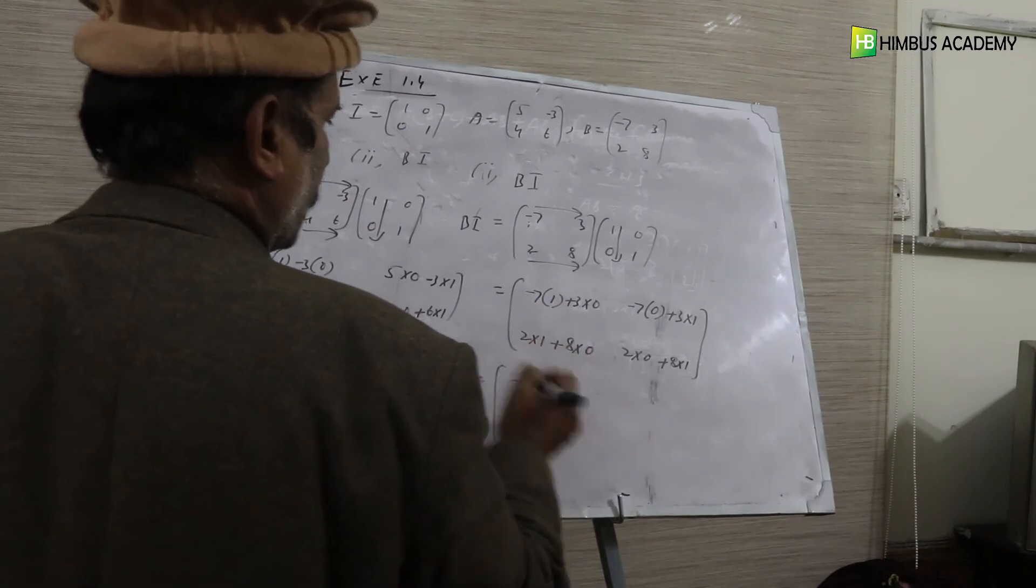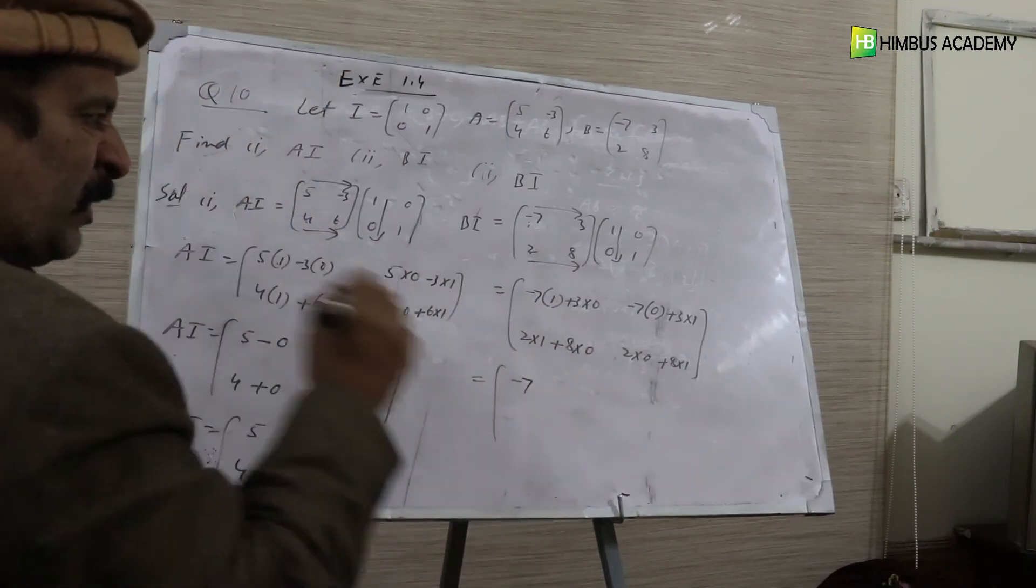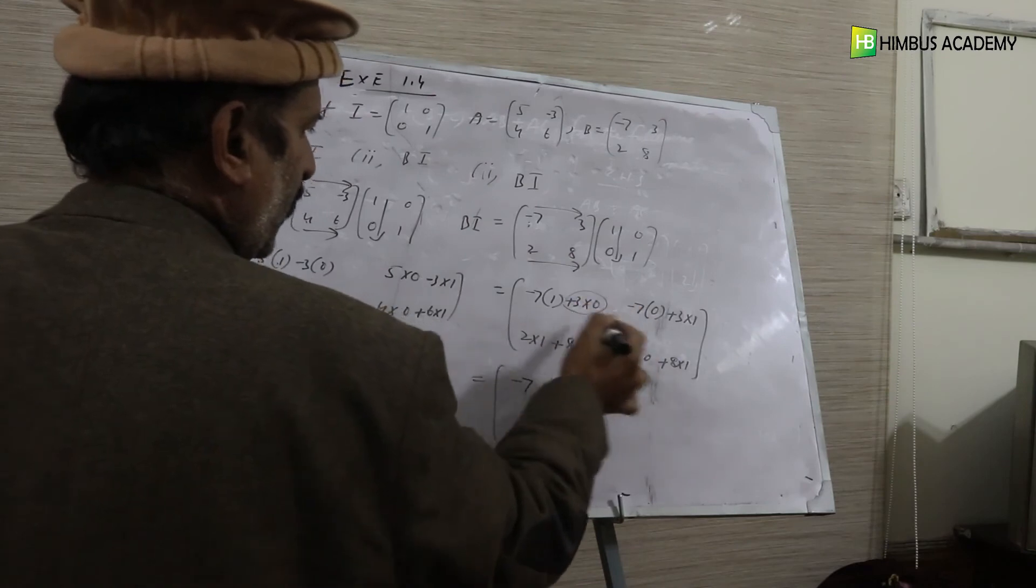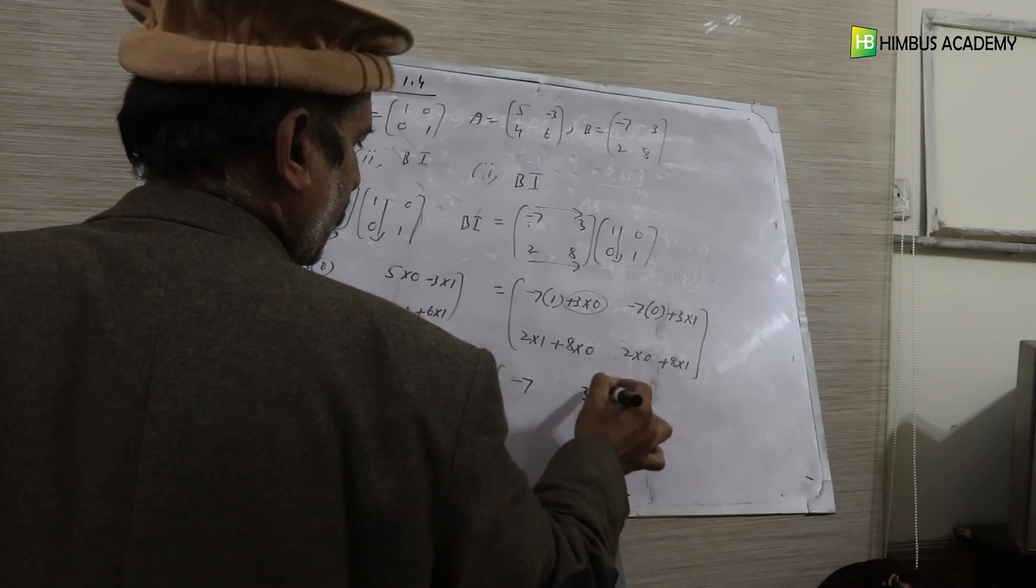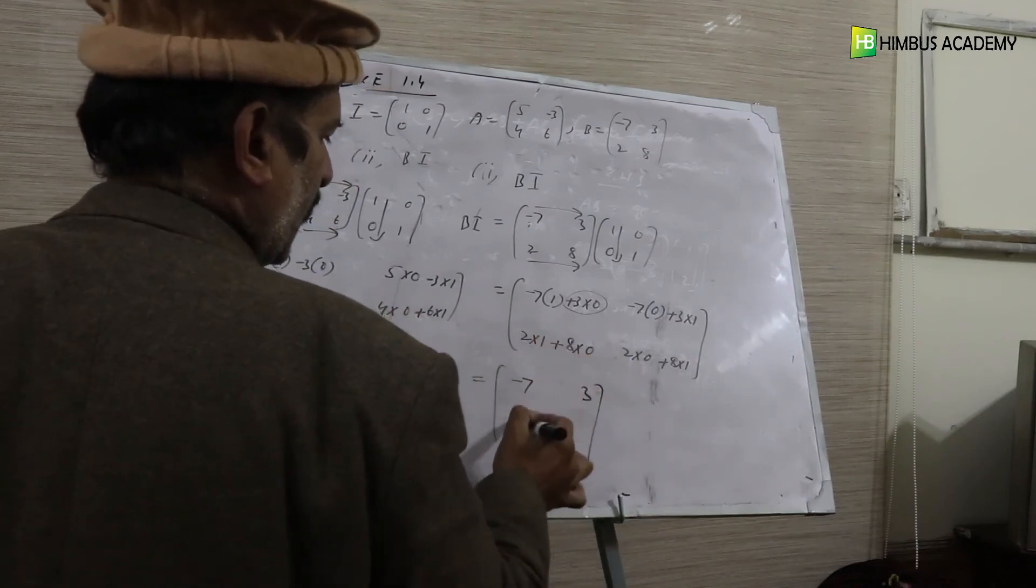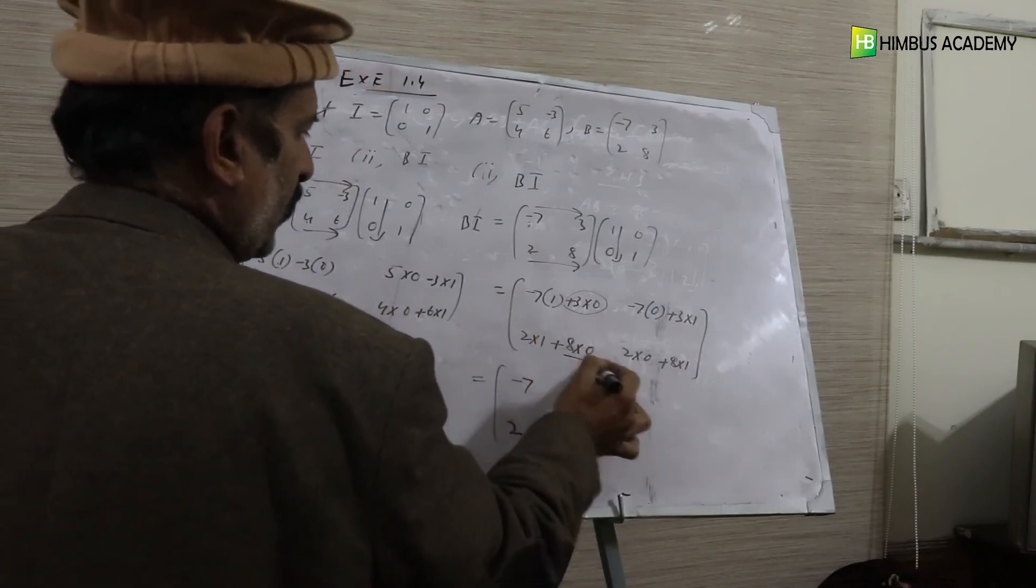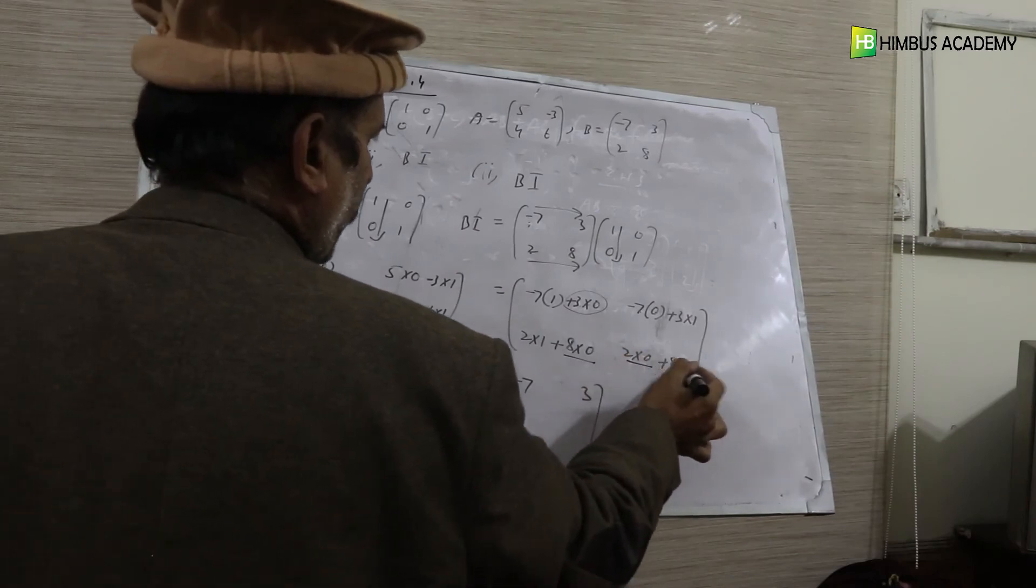Minus 7, 1, 0 - no need to write zero, we skip that step. Minus 7, 0, 0 - no need for zero here either. So 3, 1, 0 is 3. 2, 1, 0 - no need for zero here or here. So 8, 1, 0 is 8.